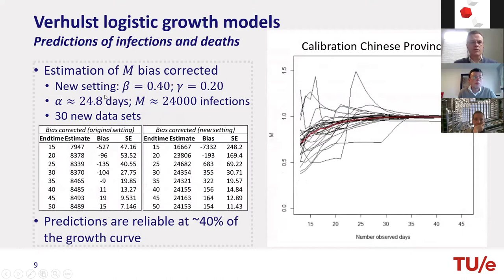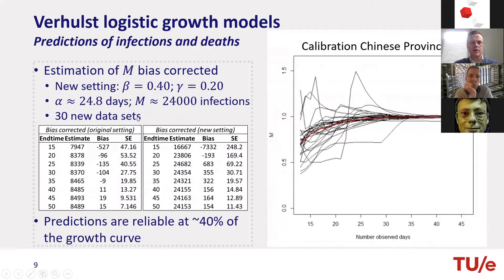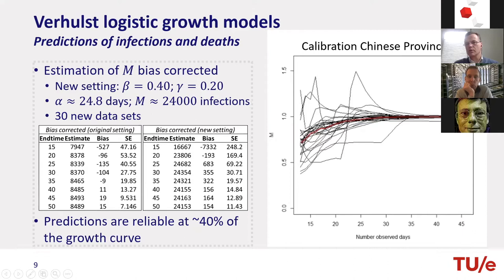If you know something about this bias correction, you can correct for it at every time point. Based on our simulations, we demonstrated we can estimate M quite well when we are at about 40% of the curve — the bias is very small. We used the provinces from China to create a calibration curve. After about 12 or 13 days, we are underestimating because in China we had the whole curve available, so we could see what happens with the calibration and use it in our predictions.